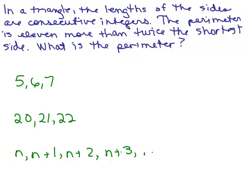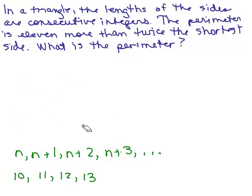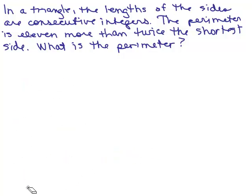In other words, this goes on and on. If the first number would be 10, the next number would be 10 plus 1, which would be 11. This would be 10 plus 2, which would be 12. This would be 10 plus 3, it would be 13. That's what consecutive integers means.